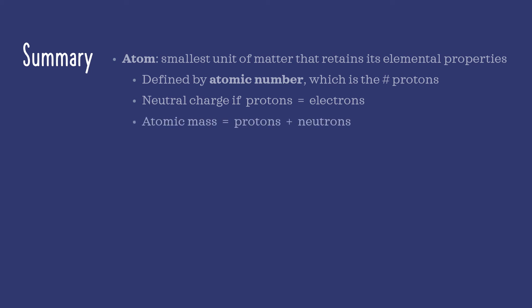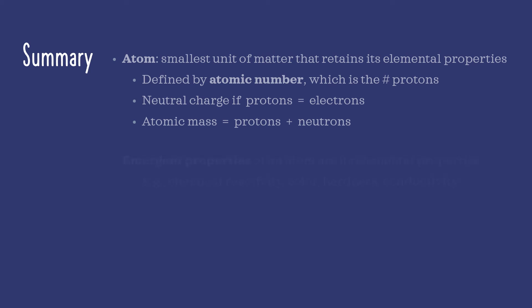You also learned that the size of the atom, called atomic mass, is equal to the sum of protons and neutrons, because electrons are so small that they don't have any mass. We also applied the core concept of emergent properties to describe those properties of atoms that are not exhibited by any subatomic component.